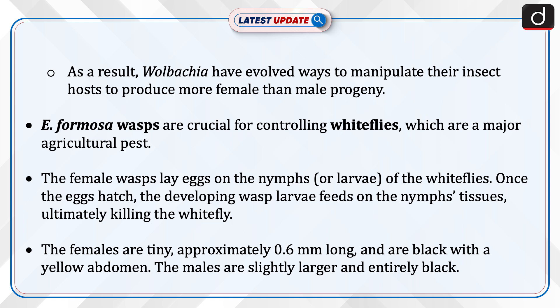E. formosa wasps are crucial for controlling whiteflies, which are a major agricultural pest. The female wasp lays eggs on the nymphs of the whiteflies. Once the eggs hatch, the developing wasp larvae feed on the nymphs' tissue, ultimately killing the whitefly.